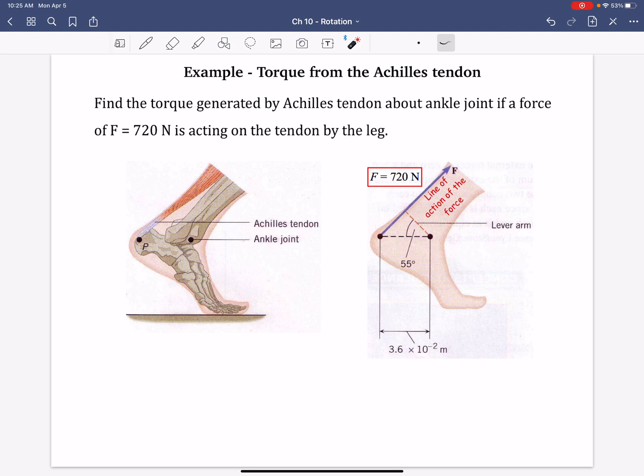Okay. So in this case, the axis of rotation is the ankle joint right there. We're given a distance from the ankle joint to the heel or where that Achilles connects. That distance there is 0.036 meters. All right. So we can find the torque one of three different ways.